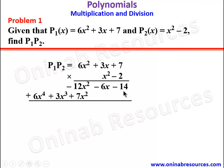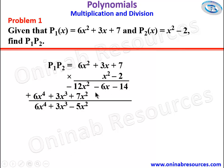Then we add. Starting from 6x to the power 4 — there is nothing to add to it, so we have 6x⁴. We bring down 3x cubed. Then negative 12x squared plus positive 7x squared gives negative 5x squared. Minus 6x has nothing to be added, so we bring it down, and likewise minus 14. That is the product of p1 and p2.